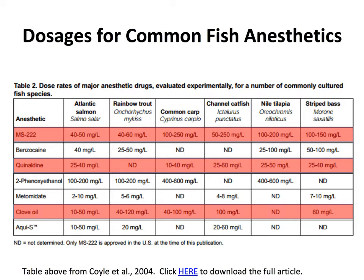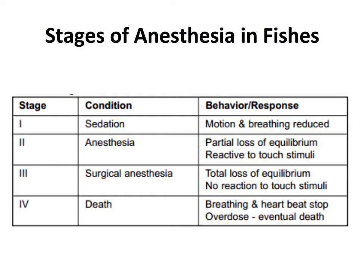Here are some dosages for common drugs used in fish anesthesia and sedation. The three we've discussed — MS-222, quinidine, and clove oil — are highlighted. Dosages vary quite widely between species; carp require a lot of MS-222, whereas salmon don't require as much. For all these drugs, start with about half the suggested amount, add it to the water, wait a minute, and see what happens. If you see no signs of anesthesia, add a little more, and so on — kind of like propofol.